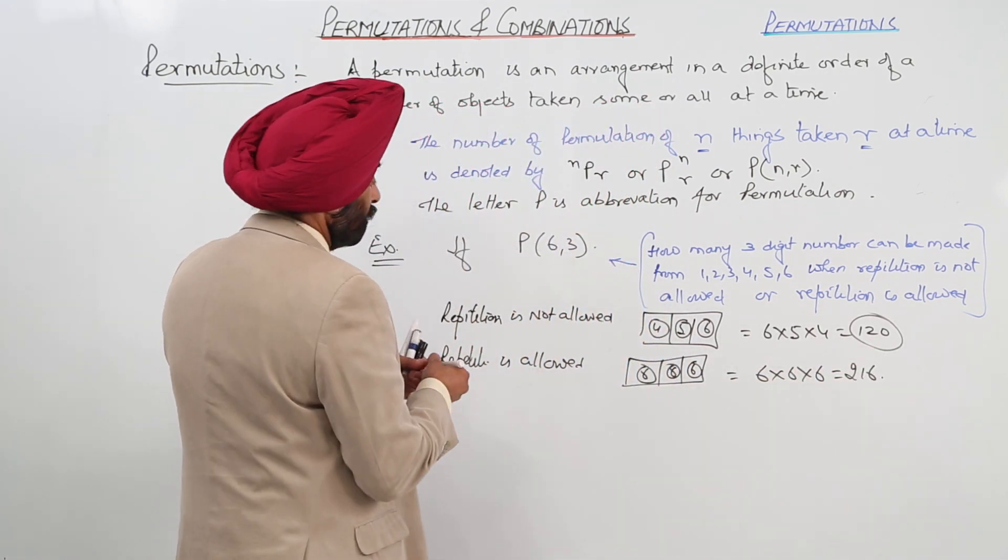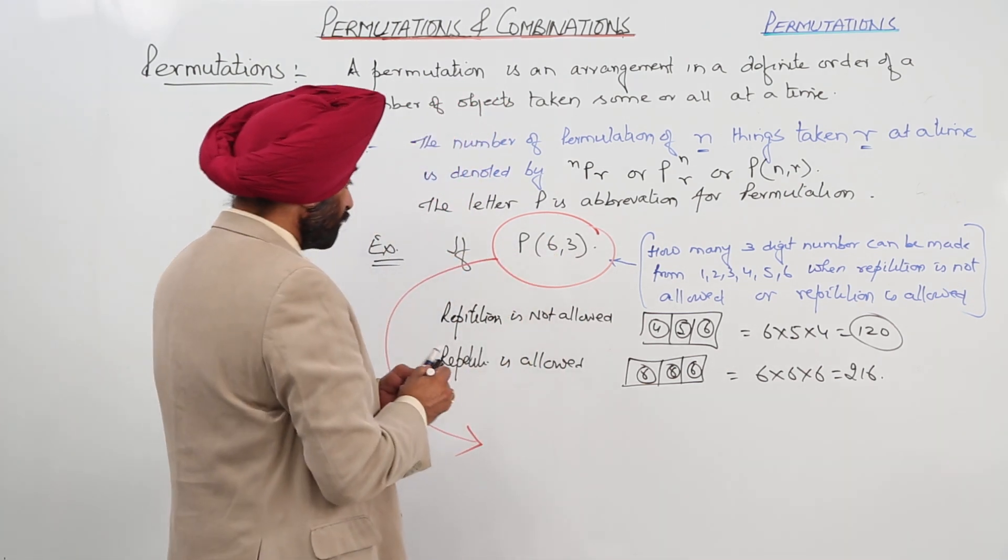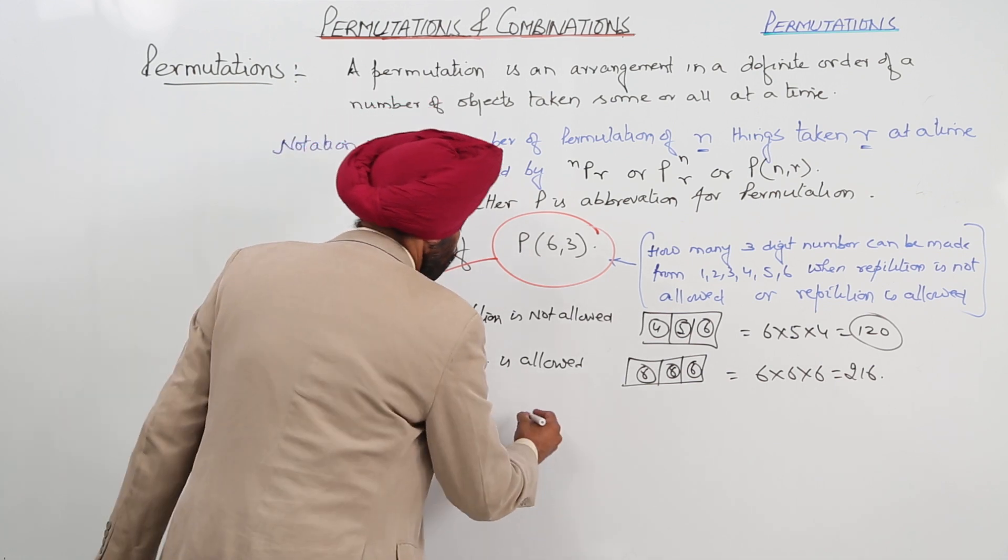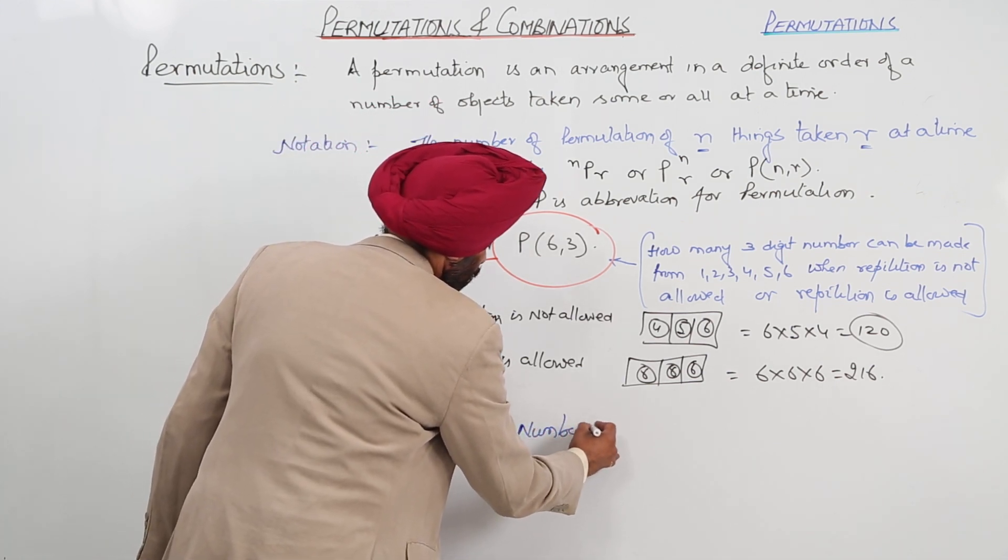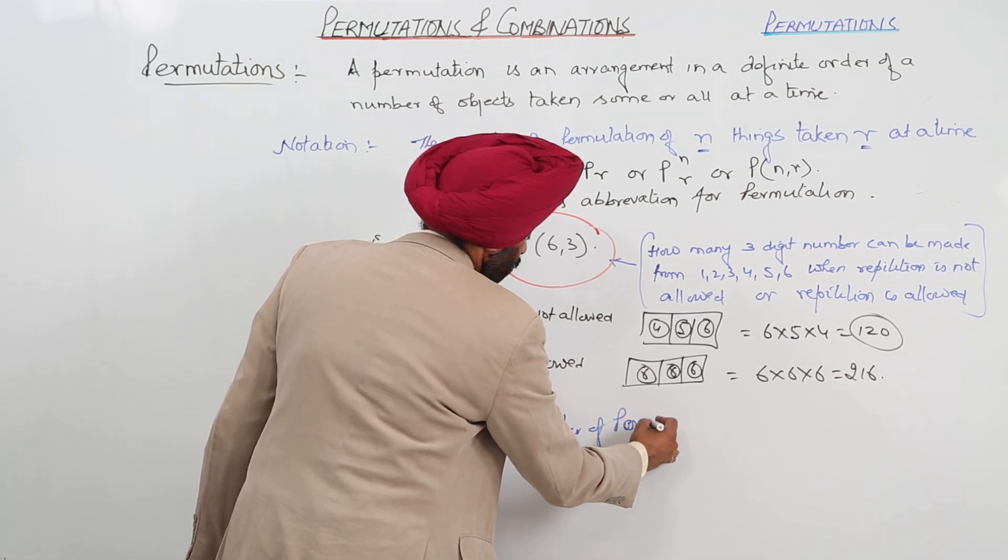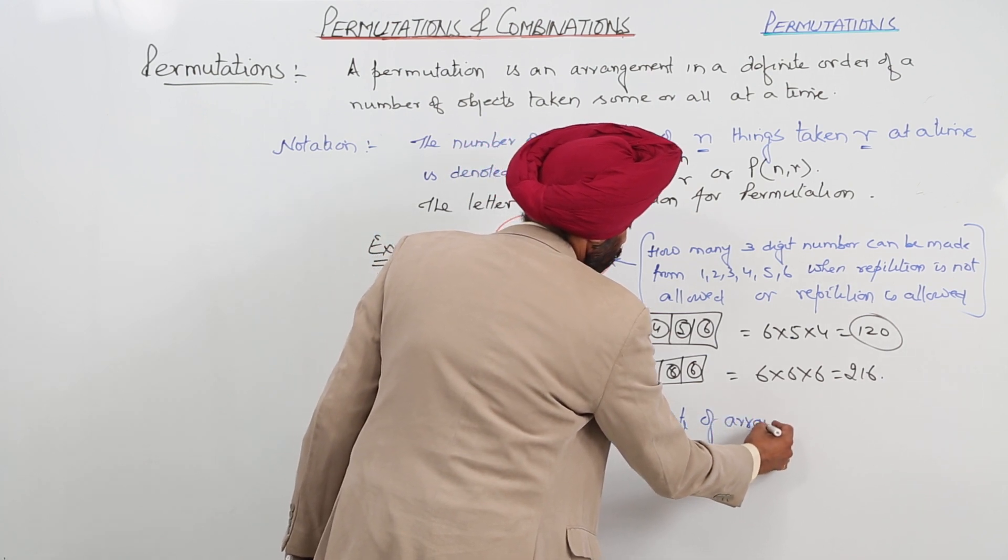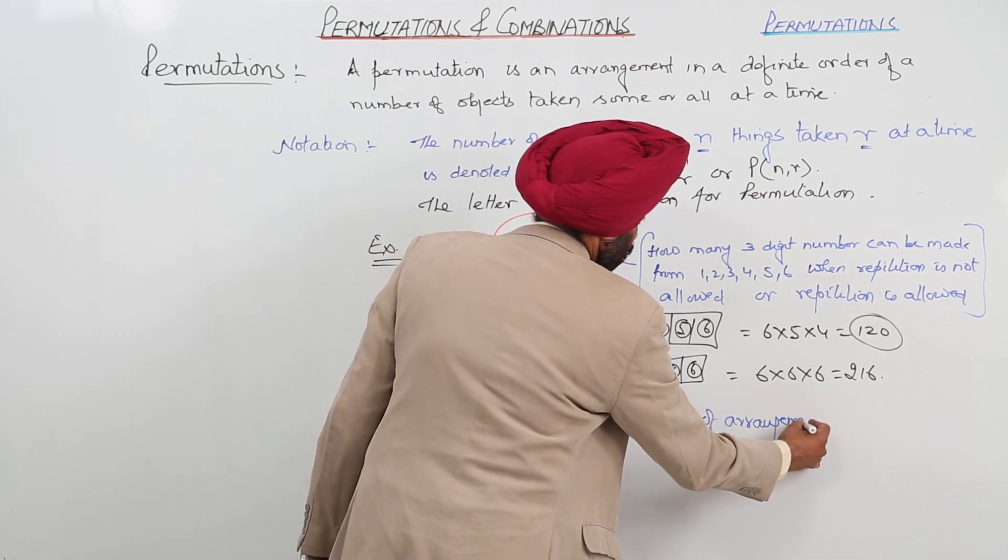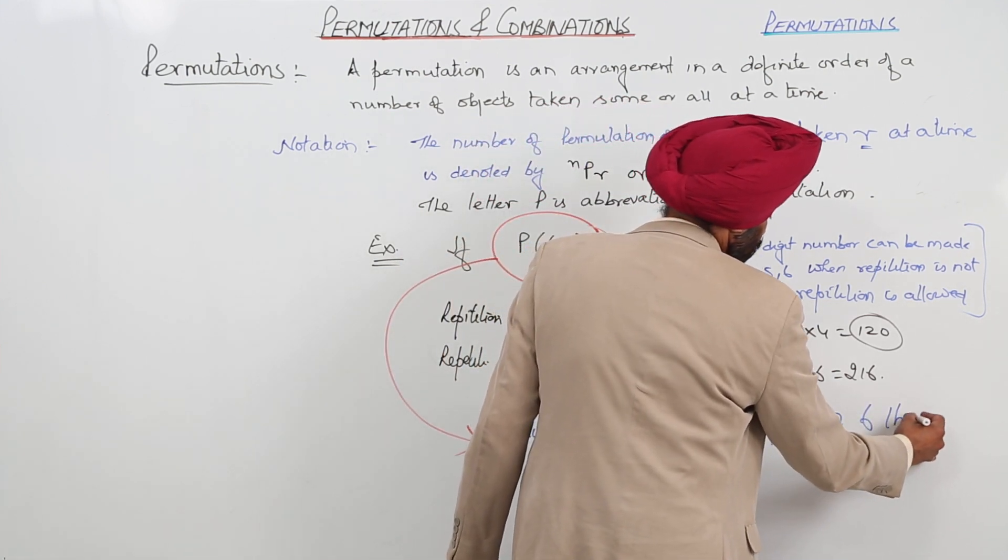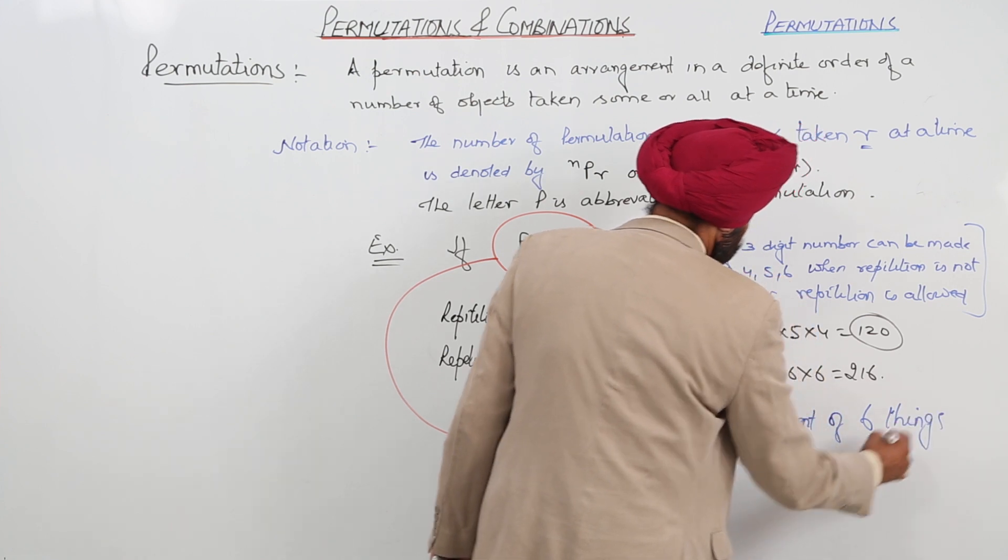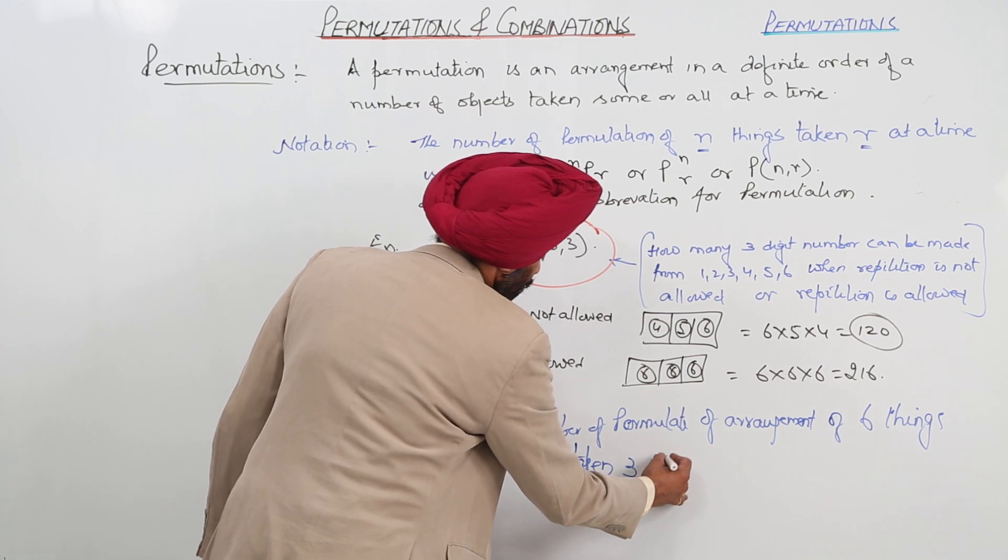So, basic thing which I want to tell you what this means. Now, what this means? This means number of permutation of arrangement of 6 things taken 3 at a time.